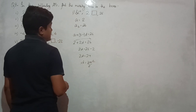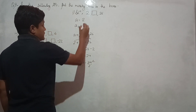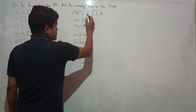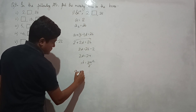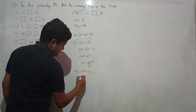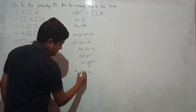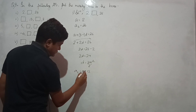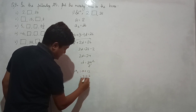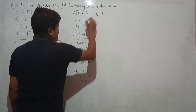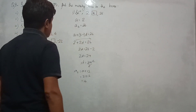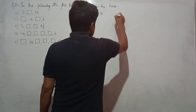Common difference is 12. So the second term is first term plus 12, which gives 2 plus 12 equals 14. So the first box answer is 14.